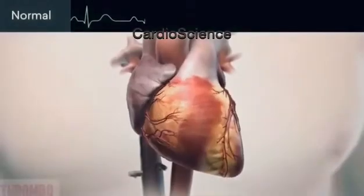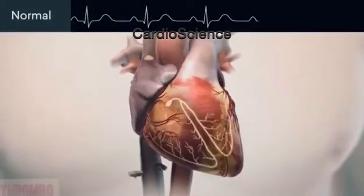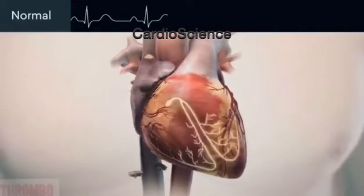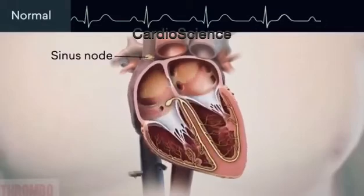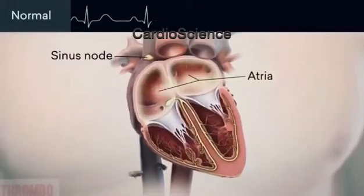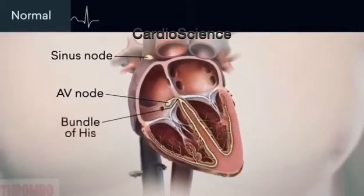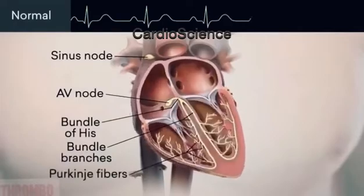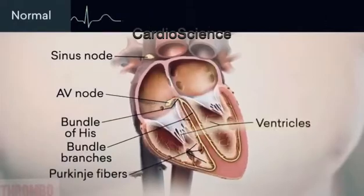The heart rate is controlled by the electrical system of the heart. The system performs a sequence of events that contracts the heart muscle. The sinus node triggers the heartbeat and causes contraction of the atria. The signal then travels to the atrioventricular node, the bundle of His, the bundle branches, and the Purkinje fibers. This causes contraction of the ventricles.